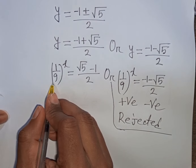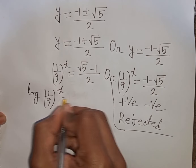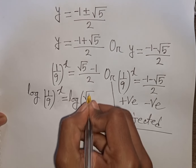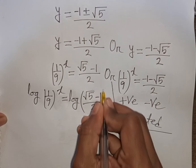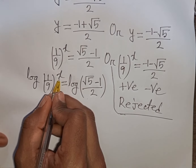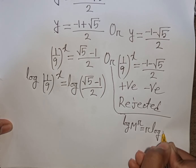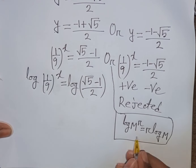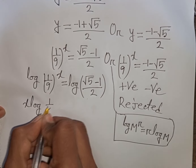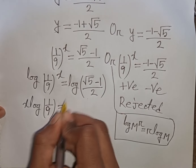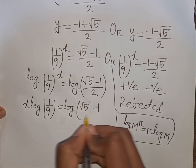Taking log on both sides: log of (1 over 9) power x equals log of (square root of 5 minus 1) divided by 2. The power x moves to the front according to the rule log m power r equals r log m, giving x log(1 over 9) equals log of (square root of 5 minus 1) divided by 2.